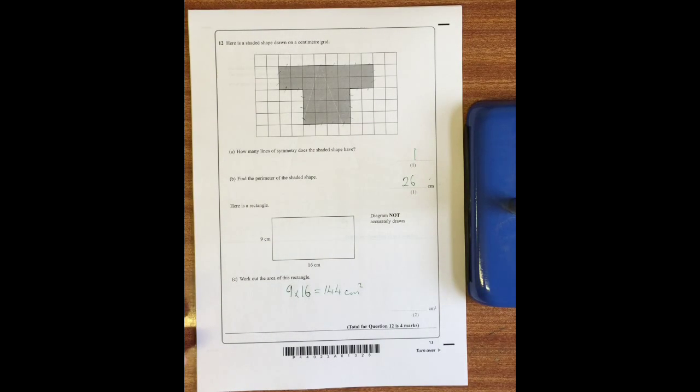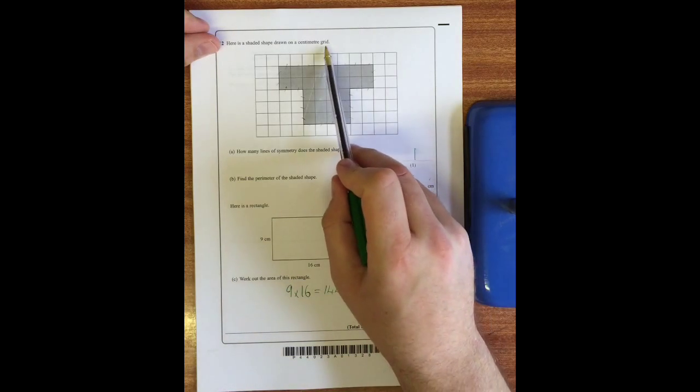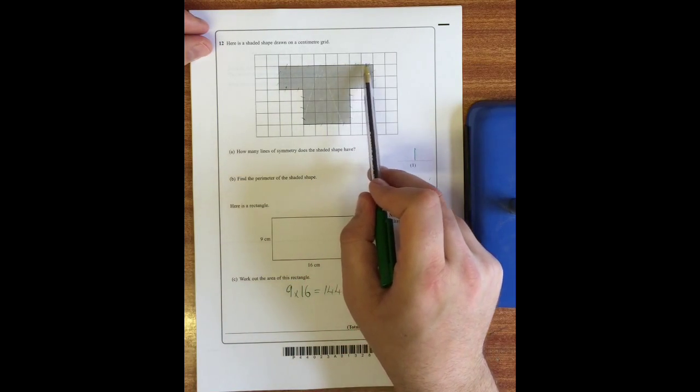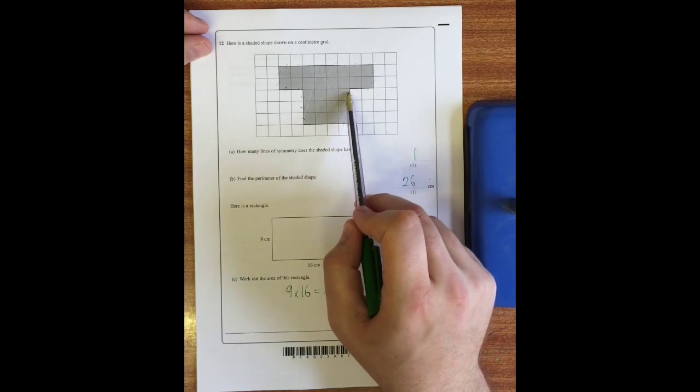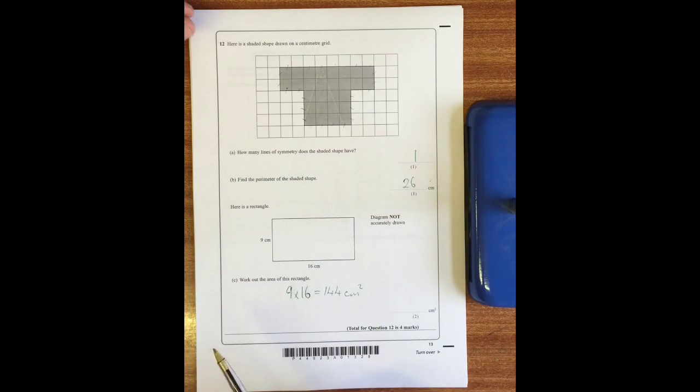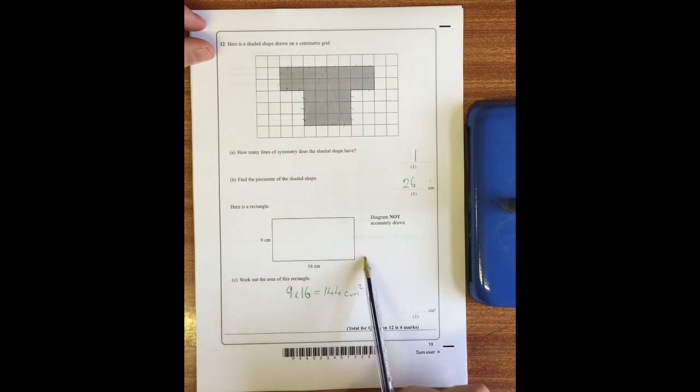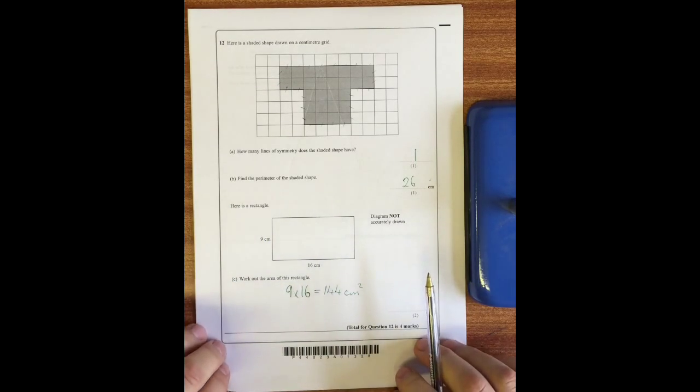Question 12: here's a shaded shape drawn on a centimeter grid. How many lines of symmetry does it have? It has one straight down the middle there. Find the perimeter of the shape. If you add up all the sides here as you go along, not counting the squares but counting the sides - as you can see I've marked them off - you get 26 centimeters. Here's a rectangle, work out its area. Well to work out the area of a rectangle you do length times width, so 16 times 9 is 144 - again you can use a calculator for that.